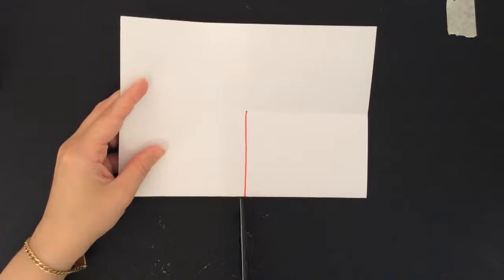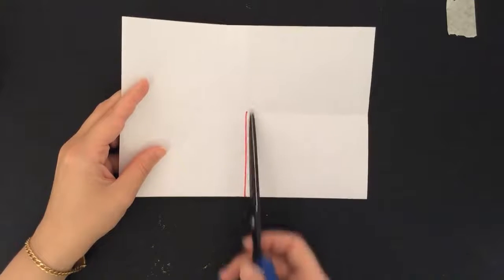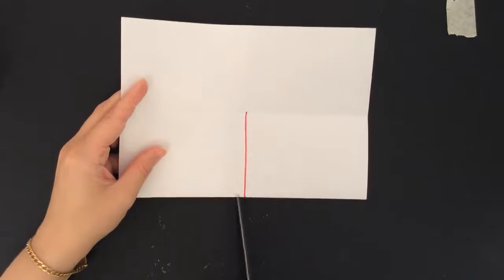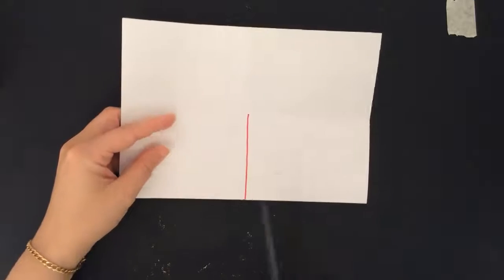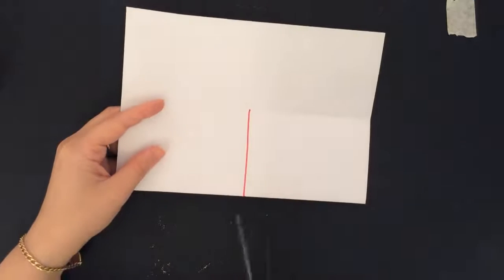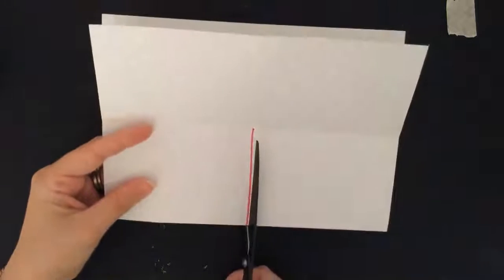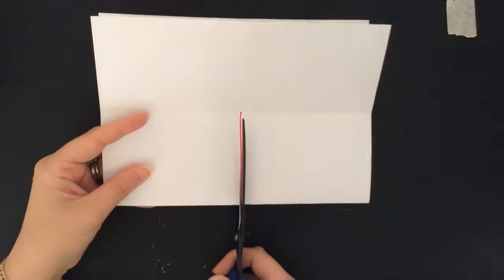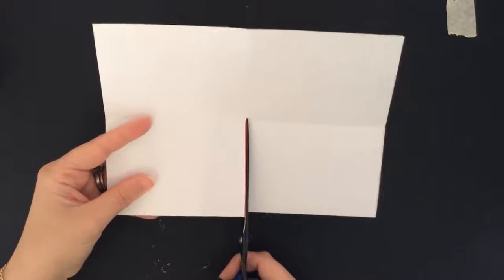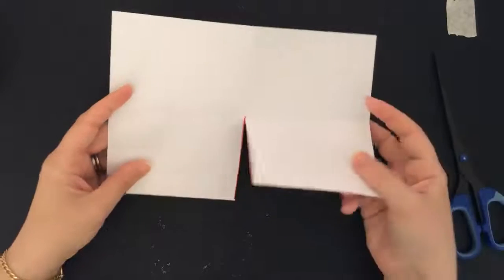I'm just going to draw a line from where the two folds meet out to the edge. And this is the folded edge. Okay, so I'm just going to cut along that line. Again, you don't need to draw this line. It will be obvious to you when you fold it where the fold line is. So you're just cutting along the fold line up to the middle of the paper. And you'll know it's the middle because that's where the two folds intersect.